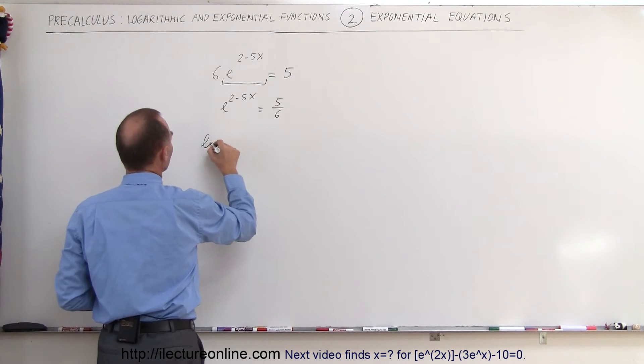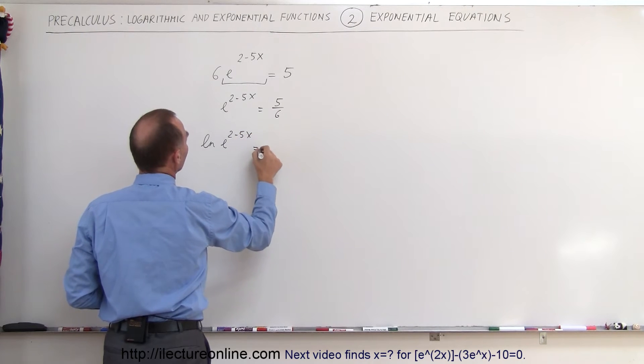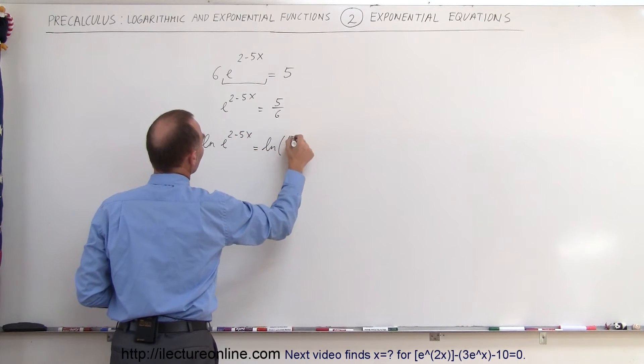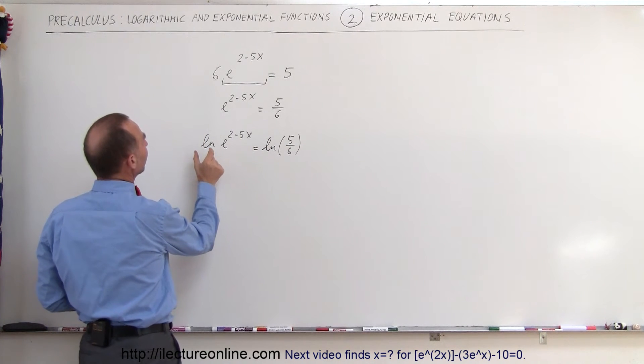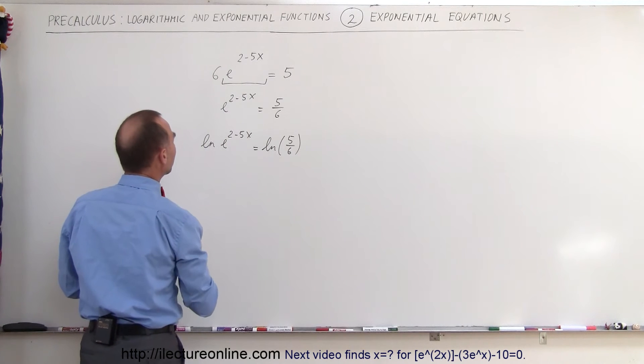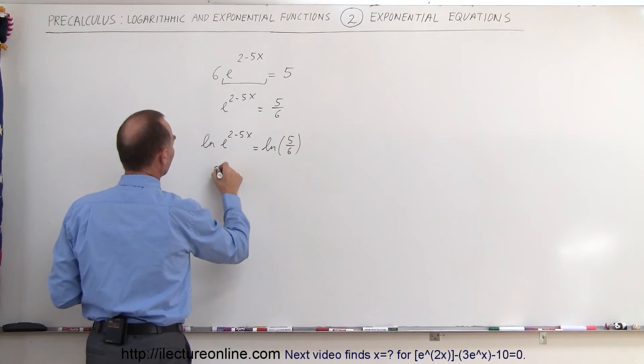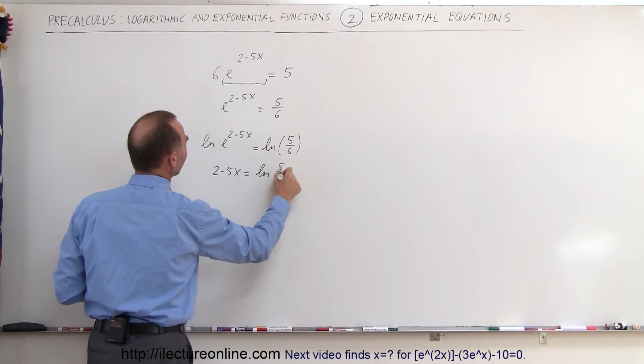When we take the natural log of the left side, we get ln(e^(2-5x)) equals ln(5/6). The rule says if we take the natural log of e raised to some exponent, we get the exponent back, so we have 2 minus 5x equals ln(5/6).